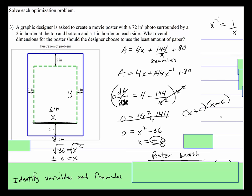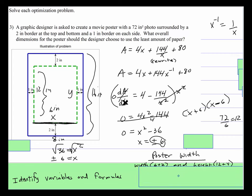Well, x is equal to 6. So if we do 72 divided by 6, we get 12. So this height is 12 inches. And if we add 2 inches to both sides of that 12 inches, this overall height is going to be 16 inches.